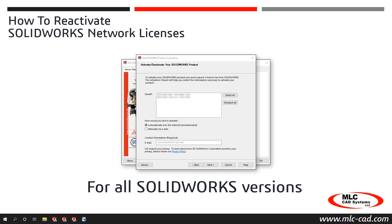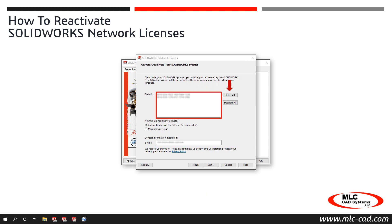The next screen displays the SolidWorks products which are currently activated on the server. From the Serial Number list, click to select the specific serial numbers to reactivate, or click Select All to highlight all your SolidWorks serial numbers.